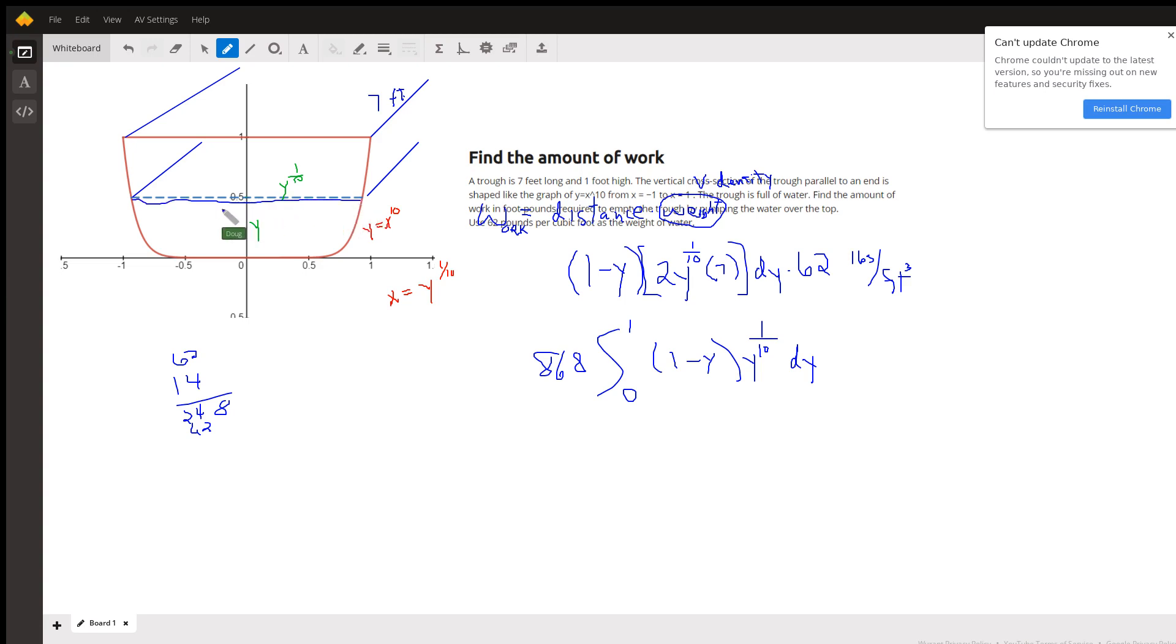We want to find how much work is involved in moving each slice over the top of the trough. Work is the distance the slice is moved times the weight of that slice, and the weight is the volume of the slice times its density in pounds per cubic foot.